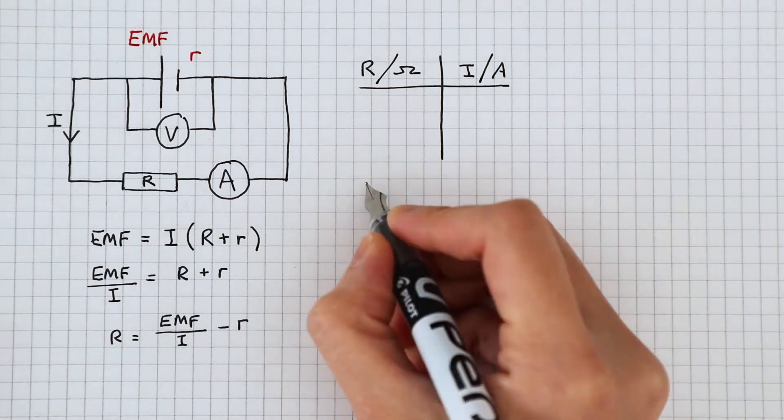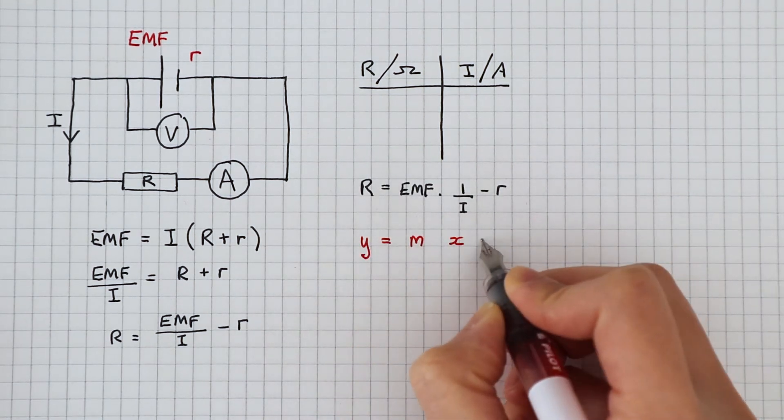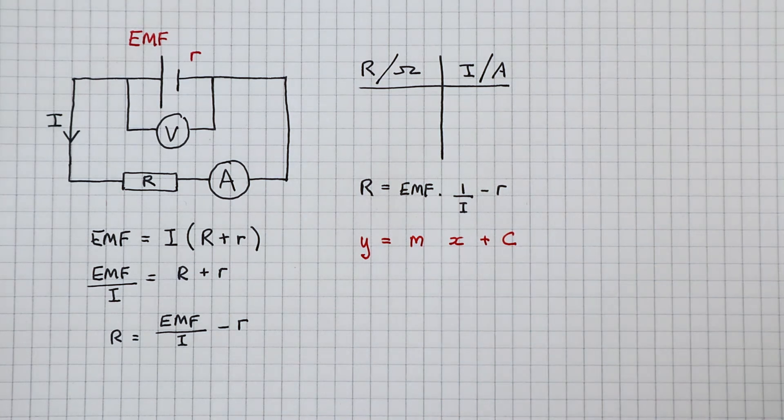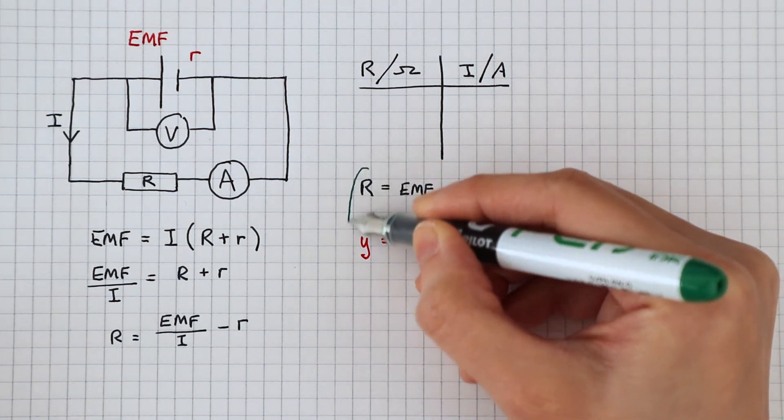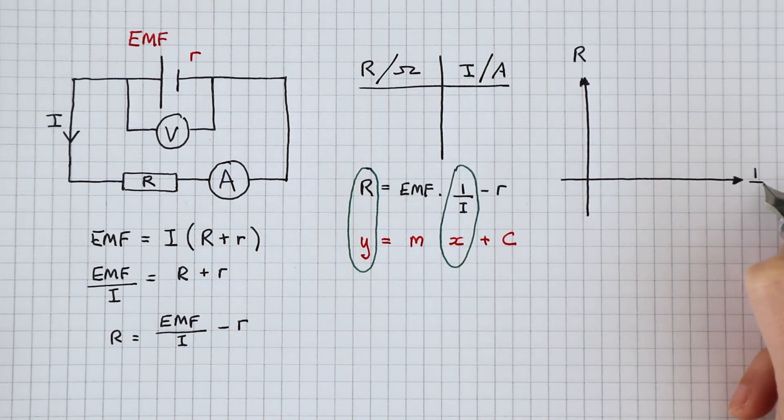We can match this equation up with the linear equation y equals mx plus c. What this means is that we need to plot the load resistance on the y axis and 1 over current on the x axis.